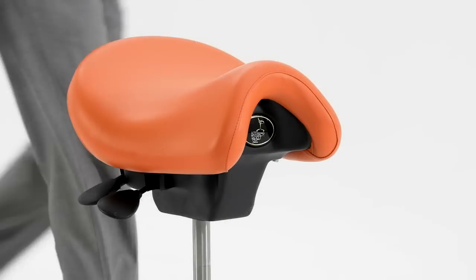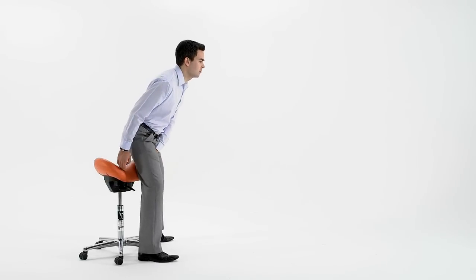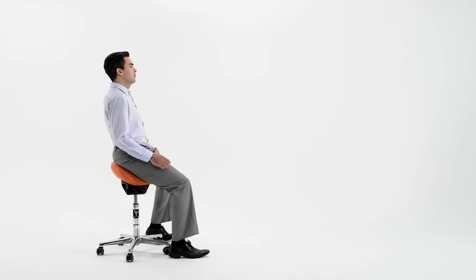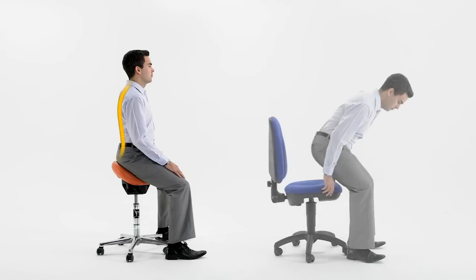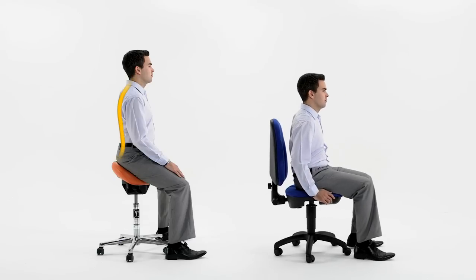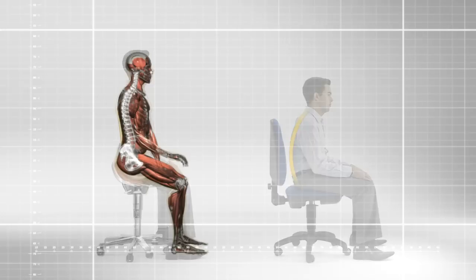So, how does the BamBak saddle seat work? Basically, the BamBak is uniquely designed in such a way that it allows your spine to keep its natural healthy S-shape while you're sitting, rather than collapse into the unhealthy C-shape that's encouraged by conventional seats.